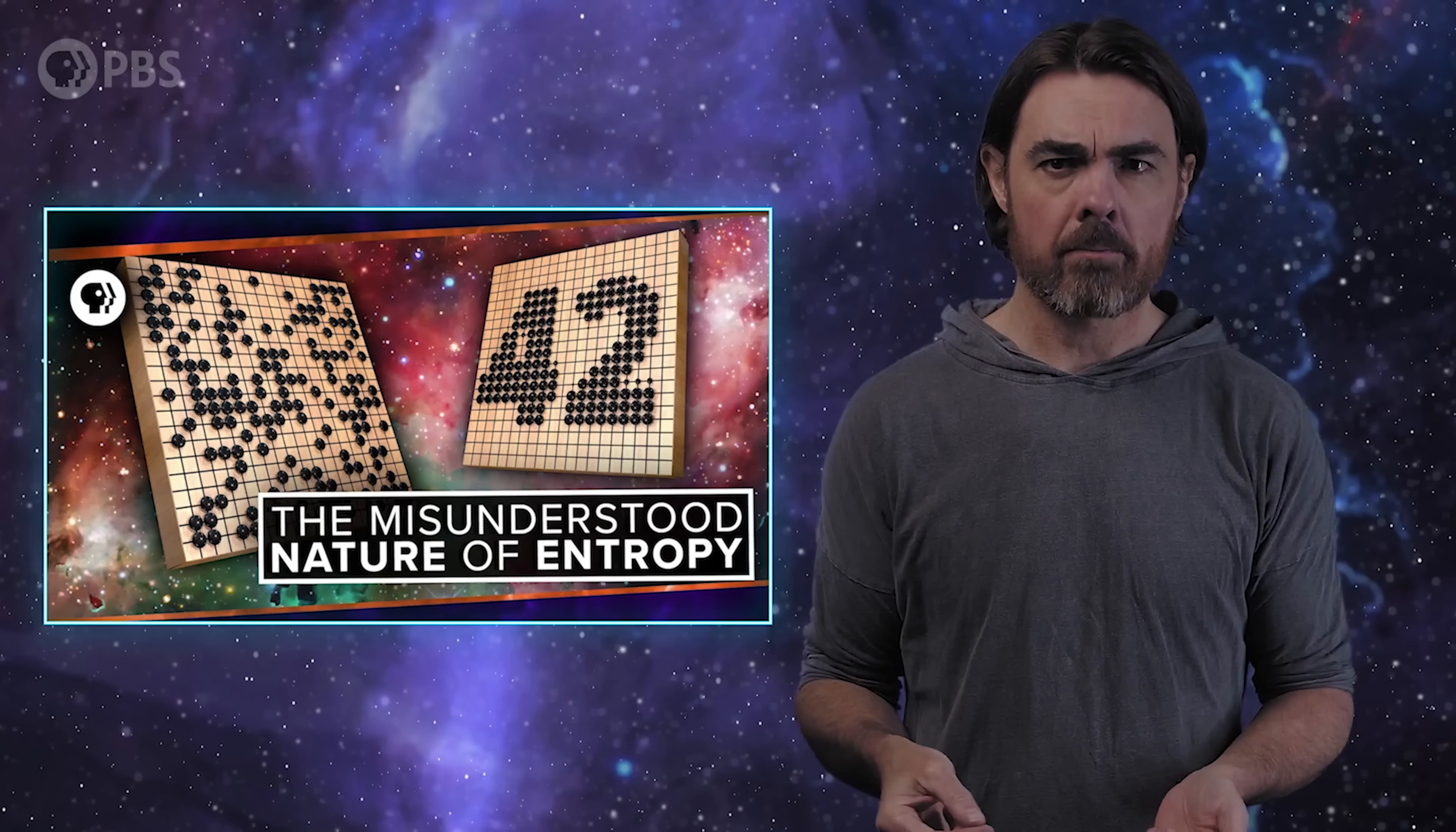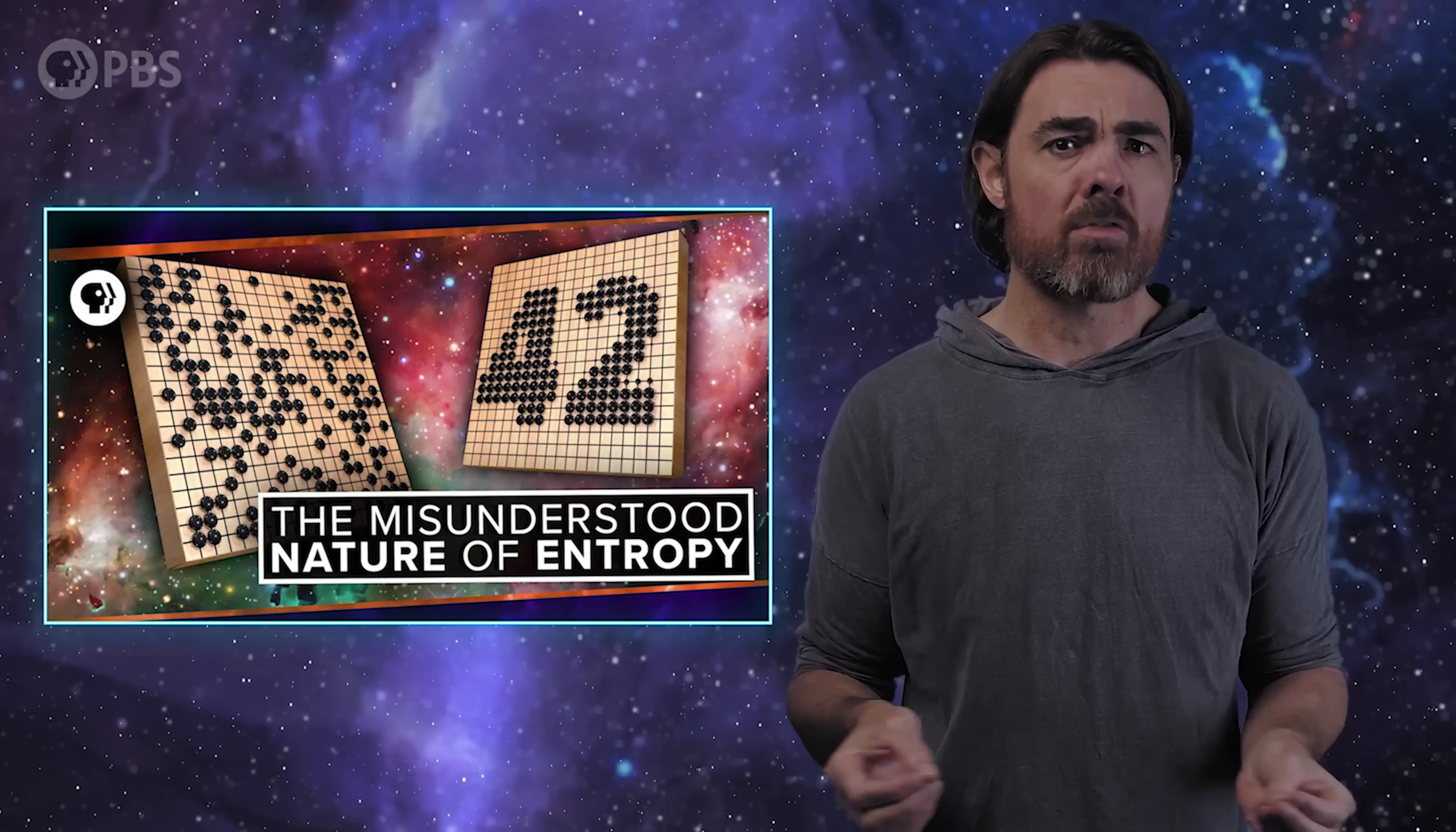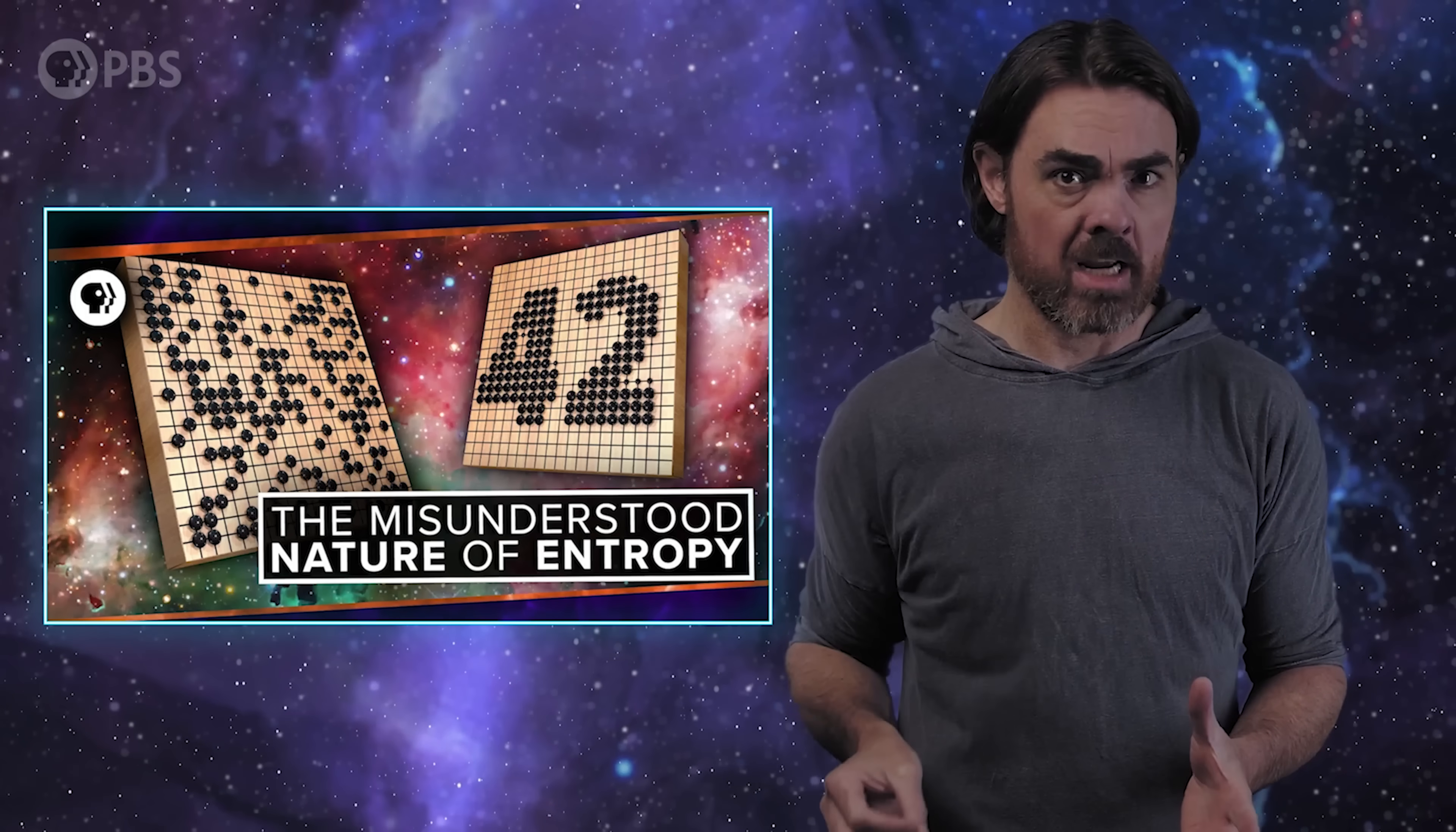We almost always observe the world in the macrostate that has close to the maximum possible number of microstates. We talked about this when we discussed entropy a while back. Entropy is a measure of how close your macrostate is to having maximum microstates, which corresponds to having the least amount of order. Systems always tend towards high entropy. But we can use these ideas about counting states to go a lot further than entropy in the laws of thermodynamics.